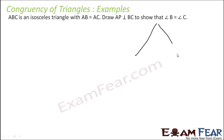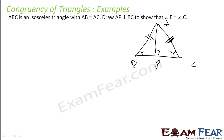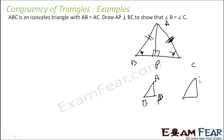ABC is an isosceles triangle, AB equals AC, and these angles are equal. AP is perpendicular to BC. We have to prove that angle B equals angle C. AB equals AC, AP is common, and the right angle at P is equal. By RHS triangles APB and APC are congruent, so angle B equals angle C. But logically, if AB equals AC, then angle B equals angle C directly by properties of isosceles triangles.